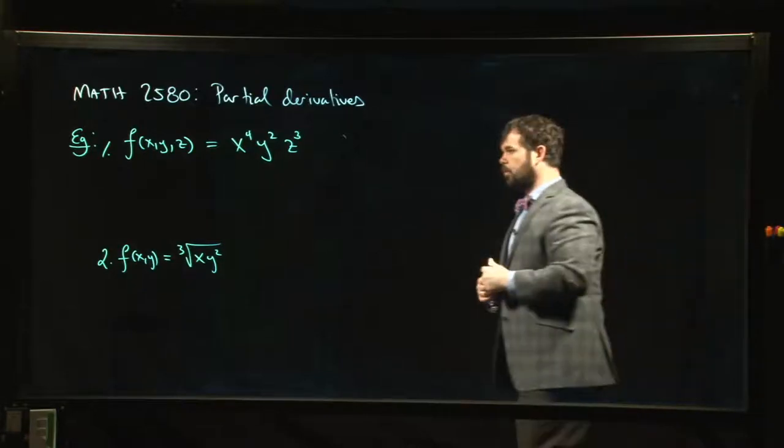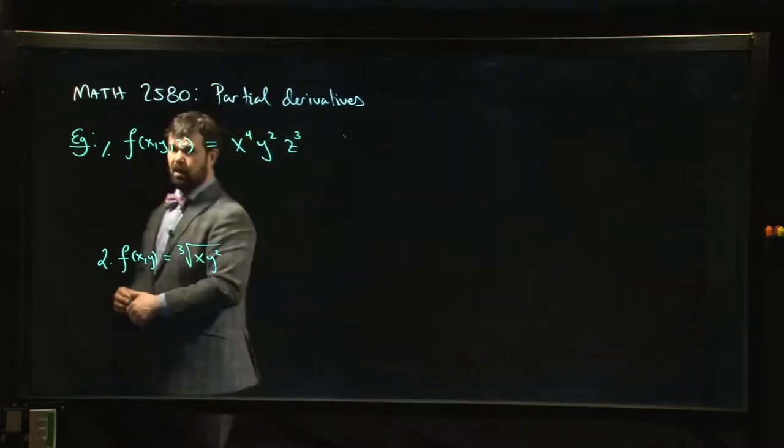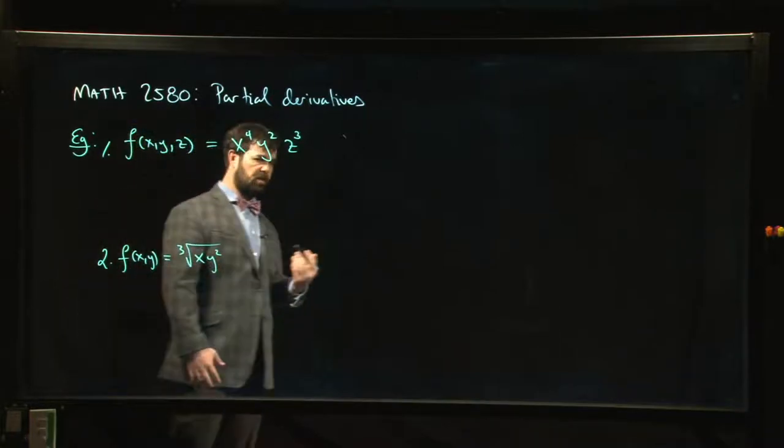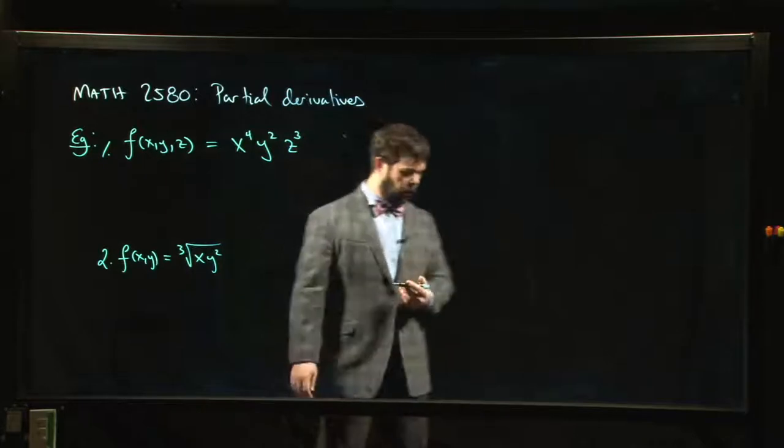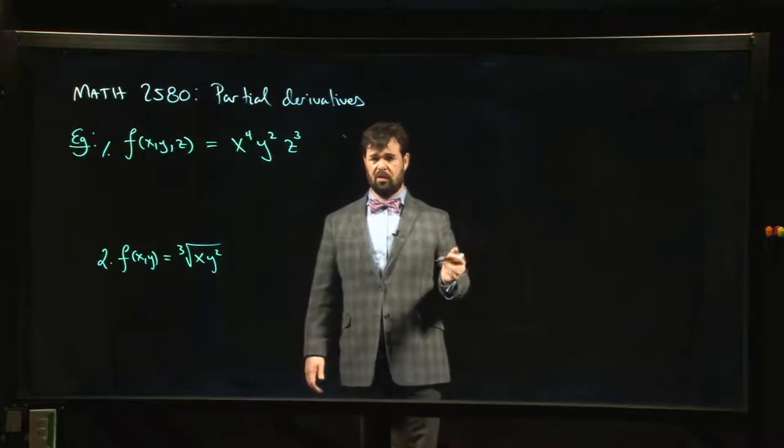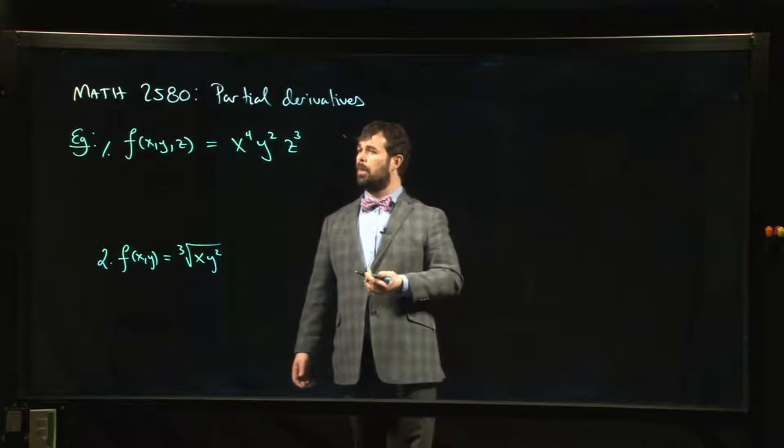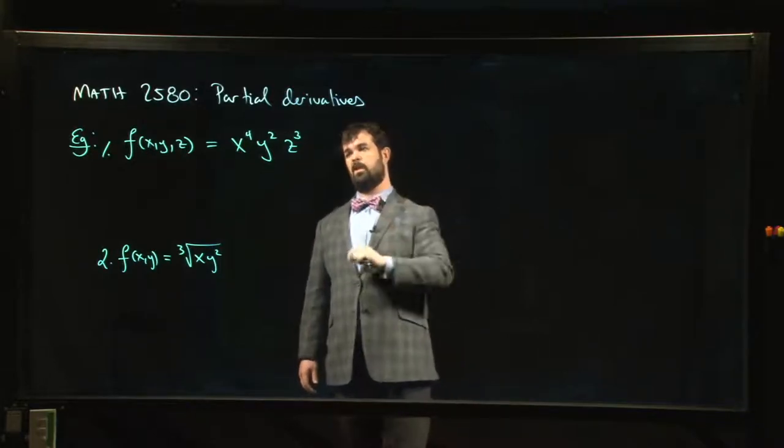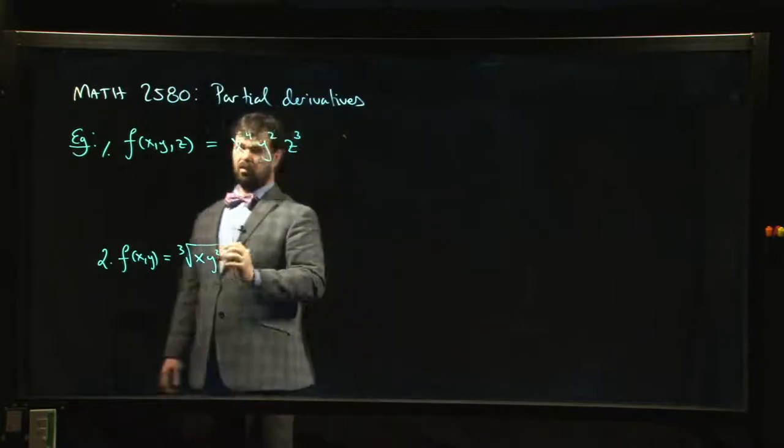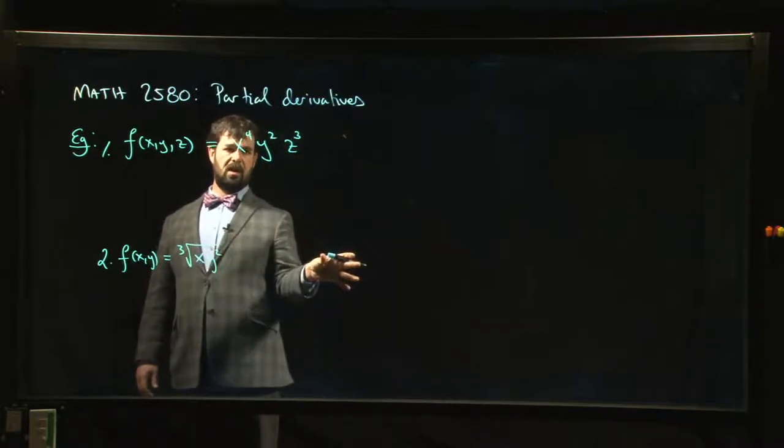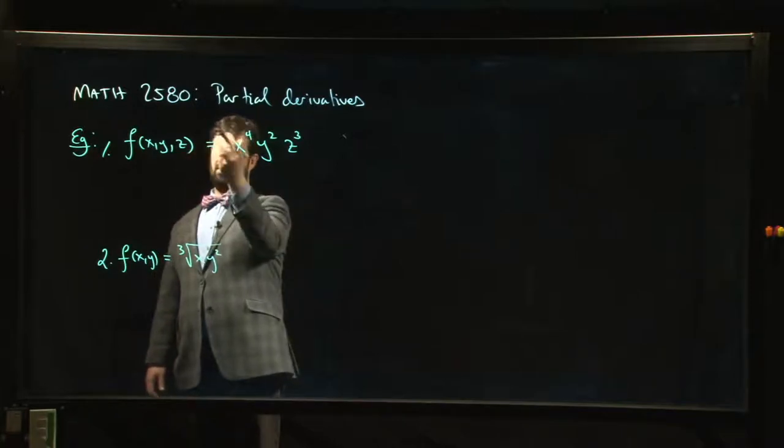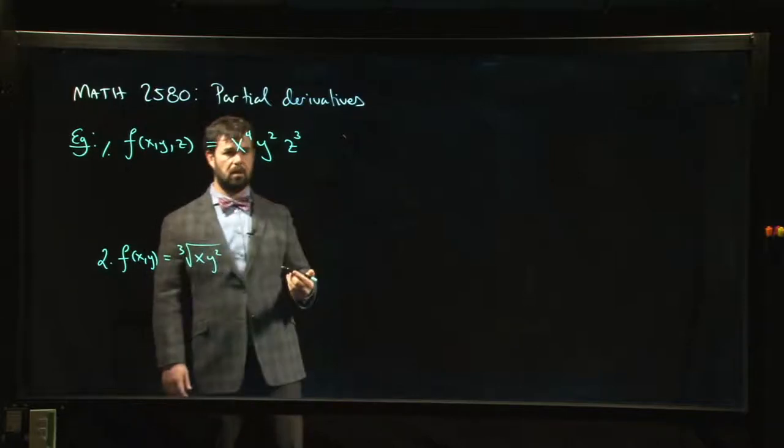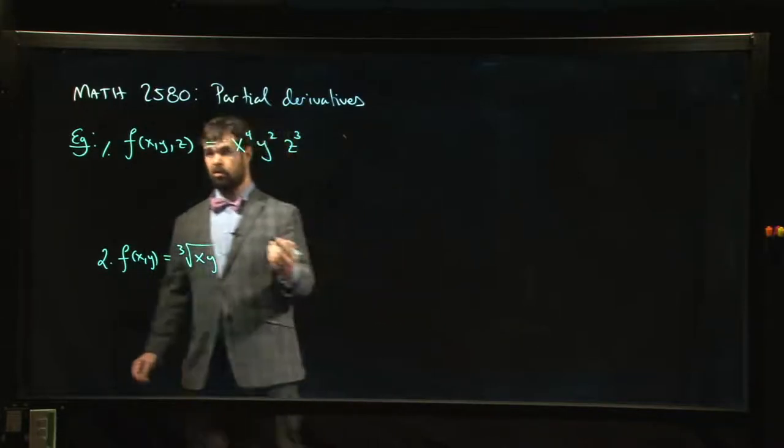Okay, so let's compute first partial derivatives for these functions. Now, remember that the rule for doing partial derivatives - the definition is given as the limit of a difference quotient just like it is in one variable. But the h that goes to zero only applies to one variable at a time. And so what that really means is you're holding two of the variables constant in the case of the three-variable function while varying one. You're always varying one variable and holding the other ones constant when you do a partial derivative.